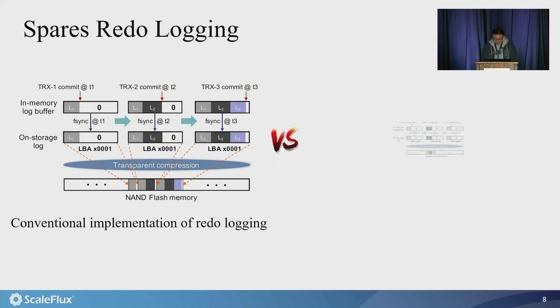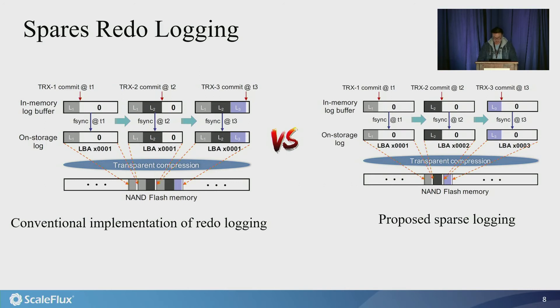And here is the proposed sparse redo logging. Its basic idea is very simple. At each transaction commit and its corresponding redo log memory to storage flush, we always pad zeros into the in-memory redo log buffer to make its content 4KB aligned. As a result, the next log record will be written into a new 4KB space in the redo log buffer. Therefore, each log record will be written to the storage device only once, leading to lower write amplification compared with the conventional practice.